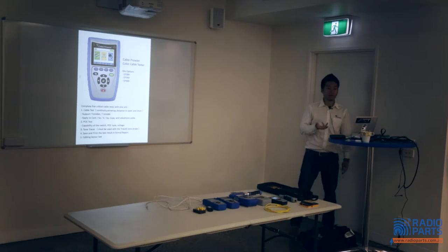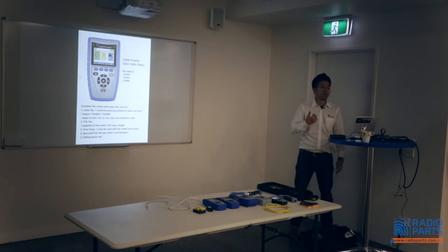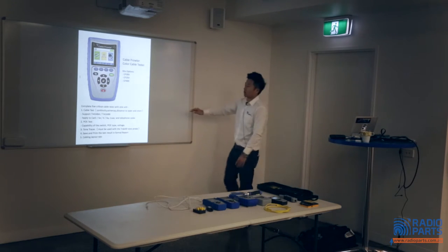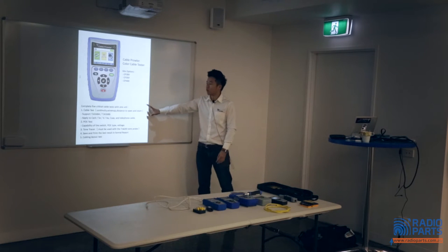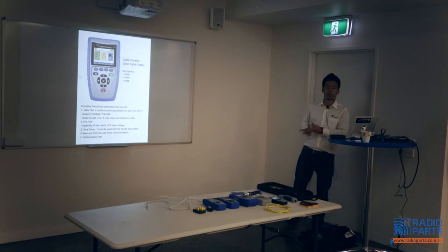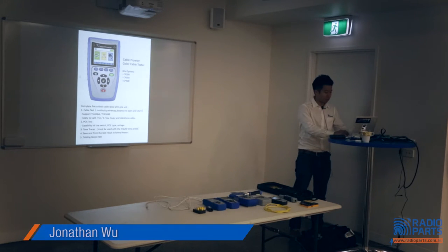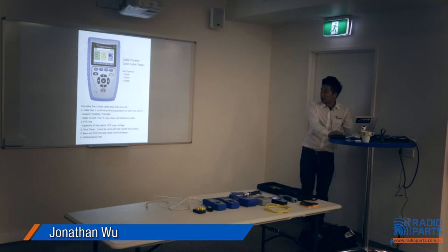Cable Prowler can be applied to Cat 3, Cat 5e, Cat 6, Cat 6a, coaxial cable, and telephone cable. Sometimes customers ask whether there's a tester for Cat 6 cable — all T3 products can cover all these different types of ethernet cable. As long as it's an ethernet cable, we can test it.